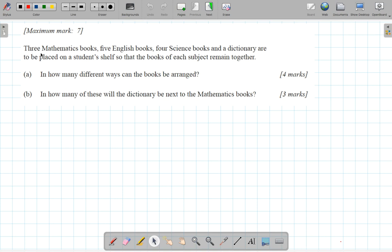Okay, here we have book arrangements. Three maths books, five English books, four science books, and a dictionary to be placed on a student shelf so that the books of each subject remain together.